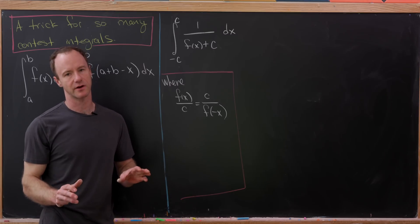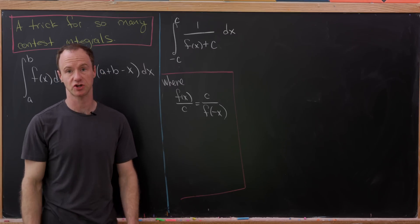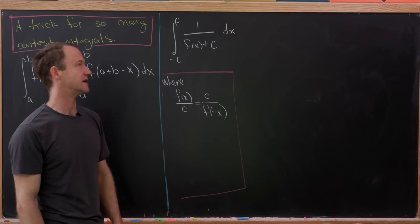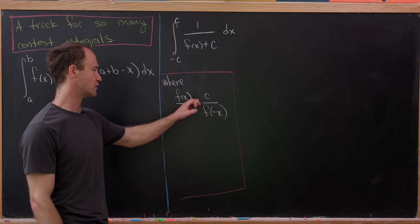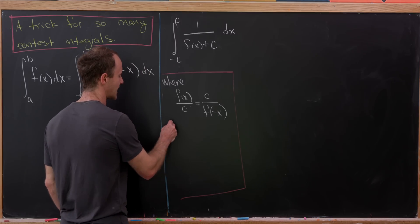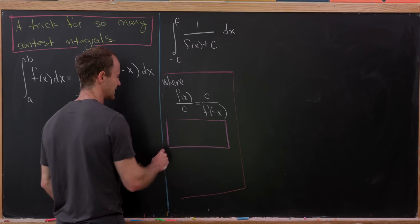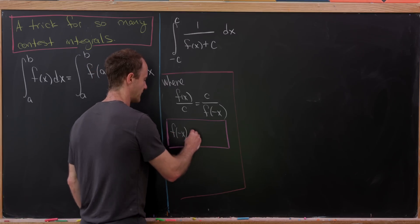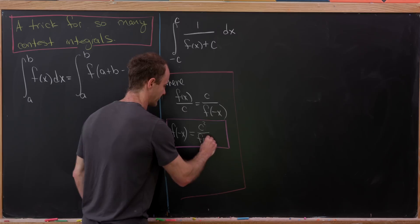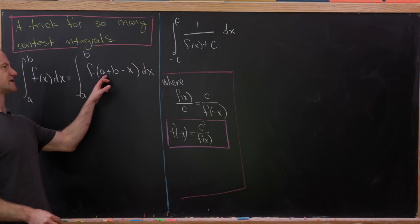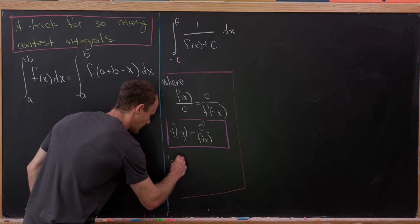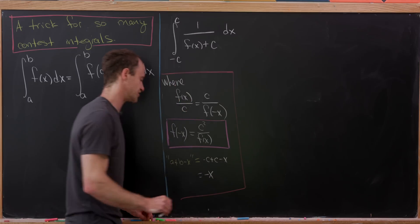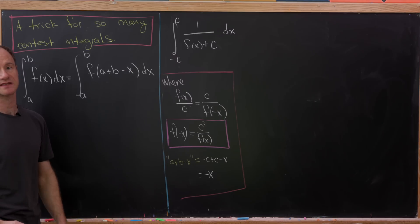Now we have a problem that looks slightly scarier but will fall very quickly to this trick: the integral from −c to c of 1/(f(x) + c) dx, given the condition that f(x)/c = c/f(−x). The version we'll need is solved for f(−x), giving us f(−x) = c²/f(x). In this setting, a + b − x = −c + c − x = −x, so the substitution simply replaces x with −x.